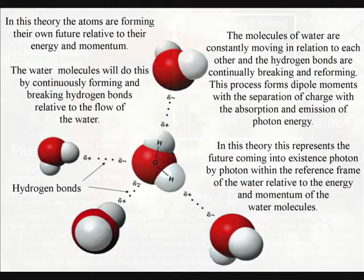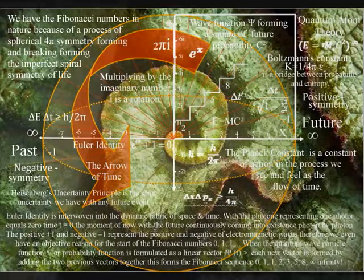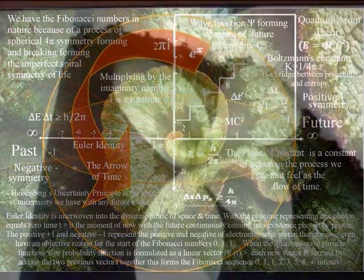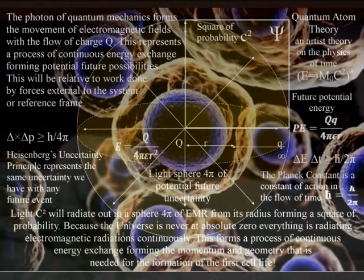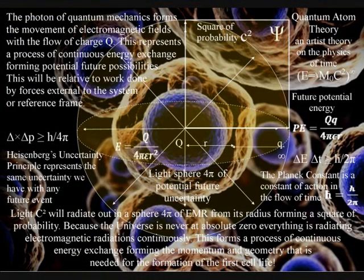Another example is photosynthesis with future plant growth unfolding relative to photon energy. Also, we find the living cells that form life exchanging positive and negative charge across the membrane of each cell with the exchange of photon energy.